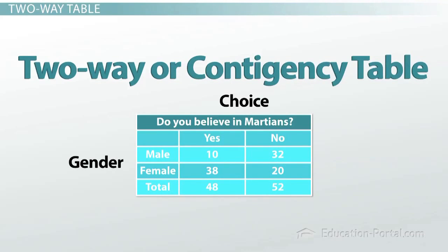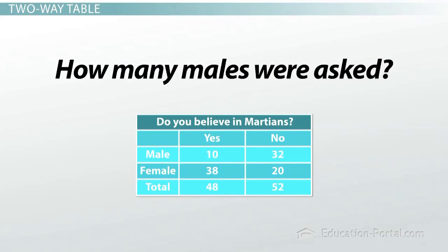There's a lot of information we can learn from this small table. Let's look at a couple of questions you can see on a test. How many males were asked? Let's look across the male row. Ten said yes and 32 said no, for a total of 42 males.